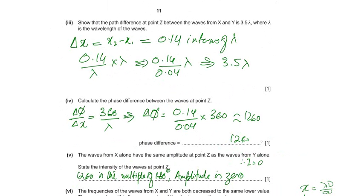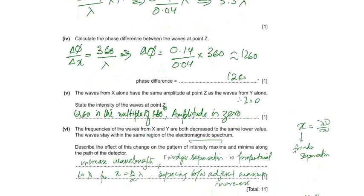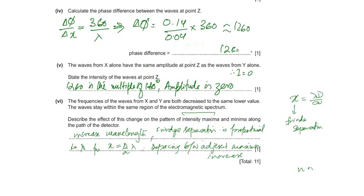The waves from X alone have the same amplitude at point Z as the waves from Y alone. Both have the same amplitude. State the intensity of the waves at point Z. 1260 is the destructive interference and is the multiple of 180 degree. Amplitude is 0, so the intensity will also be 0.